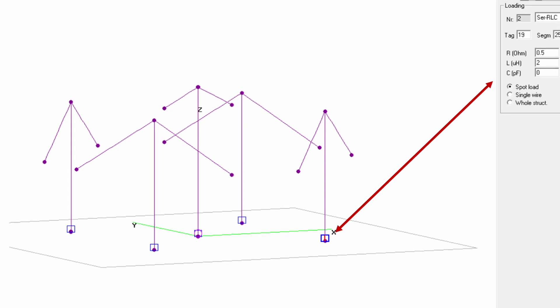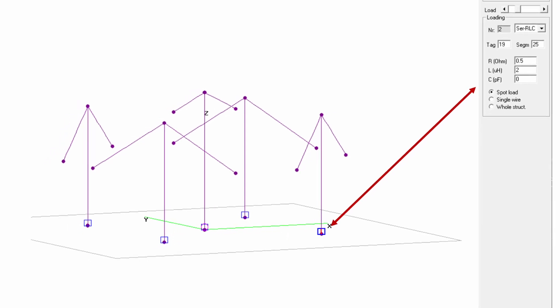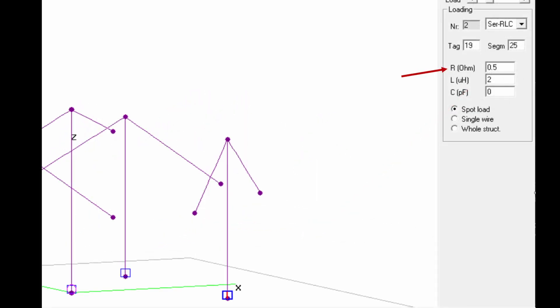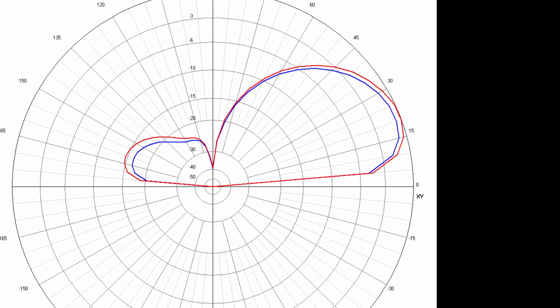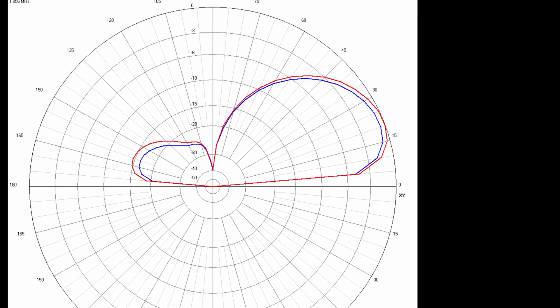By the way, in all of the 4NEC2 models shown in this video, I've inserted a 0.5 ohm series resistance in each element to account for losses. Without that resistance, all gain values will be about 0.8 dBi greater.